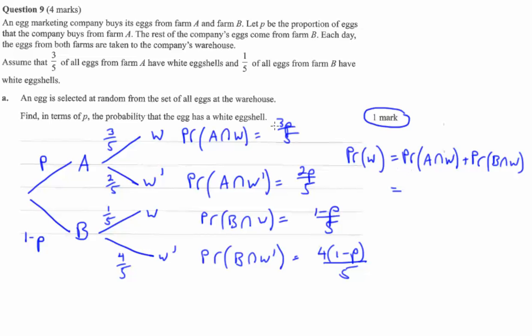Well, from Farm A and a white eggshell is three P on five. And from Farm B and a white eggshell is one minus P on five. Three P minus P is two P plus one over five. And that's the probability for one mark.